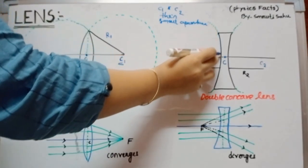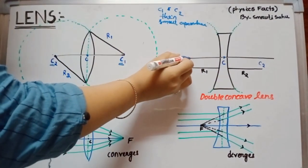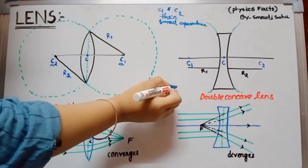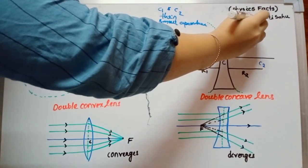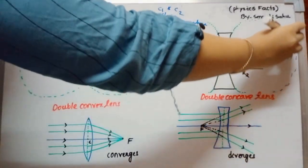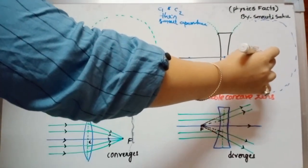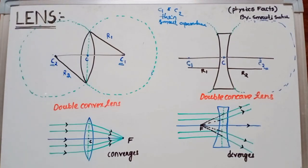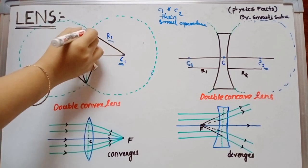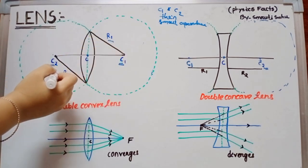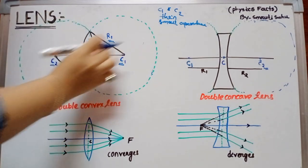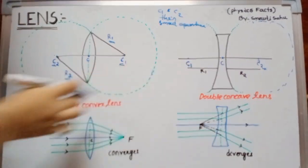For a concave lens: the first refracting surface is part of a sphere, and its center C1 is the center of curvature for the first refracting surface. The second refracting surface is part of a second sphere, and C2 is the center of curvature for the second refracting surface. The radius of the sphere is known as the radius of curvature. Because the lens is very thin, the radius of curvature of both surfaces may be the same.